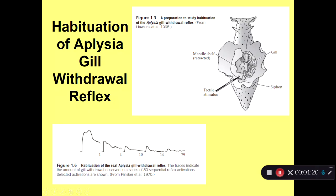The Aplysia breathes over a gill, which is a very delicate organ that exchanges gas with the water and allows the Aplysia to get oxygen. It's also a tasty morsel for fish, which like to feed on the gill and would kill the Aplysia. So the Aplysia has developed a reflex called the gill withdrawal reflex, where if the gill or surrounding tissue is stimulated, it'll withdraw.